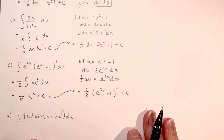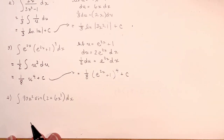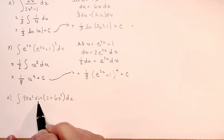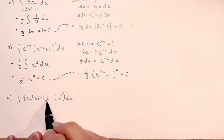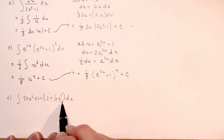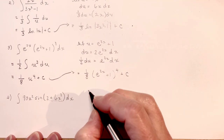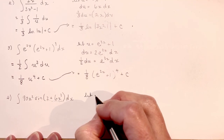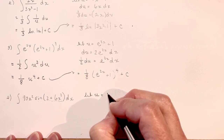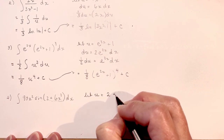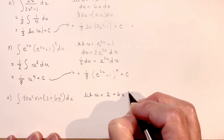Moving right along, we have a trigonometric integral with sine in it. If I use the inner expression for my u and take the derivative, I'm going to get 18x squared, but this term has 90x squared. So I'll need just a little adjustment. I'm going to let u be equal to 2 plus 6x cubed.